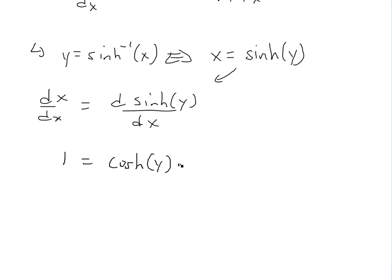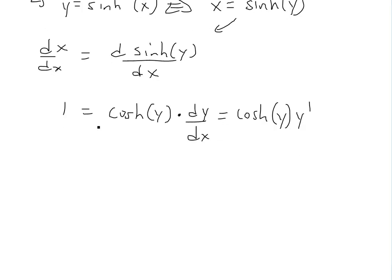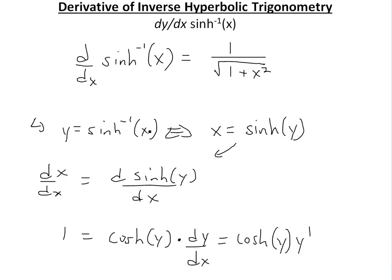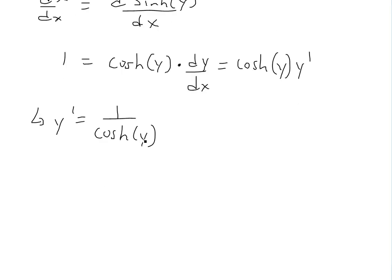Now we apply the chain rule, because we're differentiating in terms of x. So the derivative becomes hyperbolic cosine of y times y prime. Solving for y prime, we get y prime equals 1 divided by hyperbolic cosine of y. But this is expressed in terms of y itself, which isn't ideal.